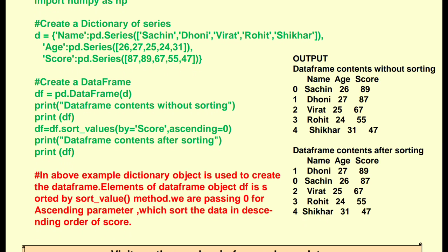Ascending order is the default, so there is no need to write it explicitly. But in this example we are converting the data to descending order, so we write ascending equals to 0. We write ascending equals to 0 because we are passing zero for the ascending parameter, which sorts the data in descending order of score.